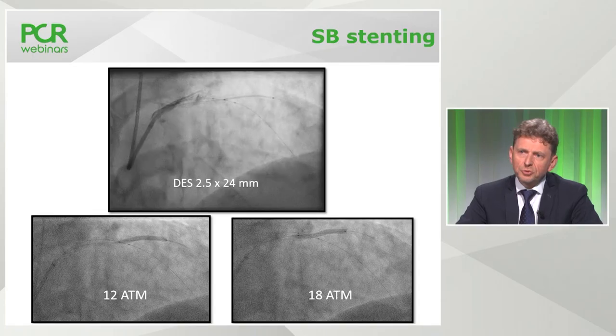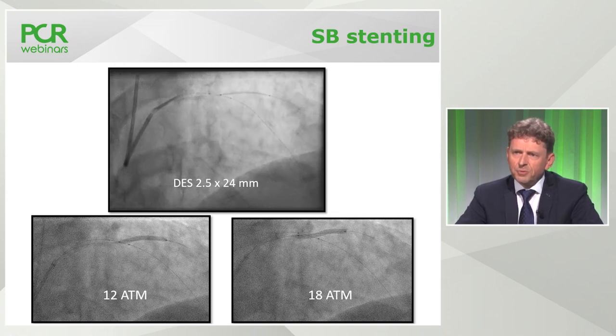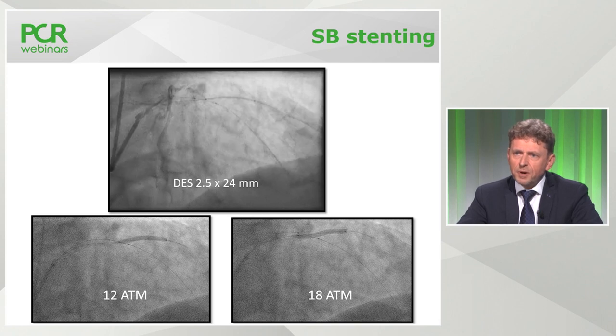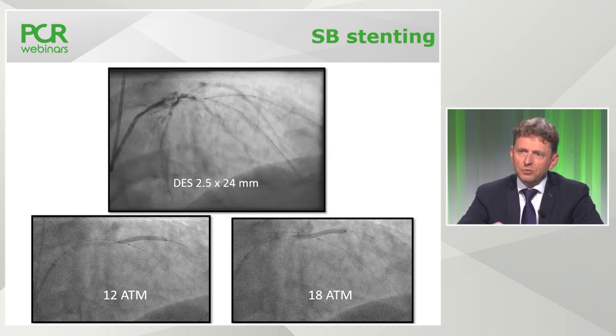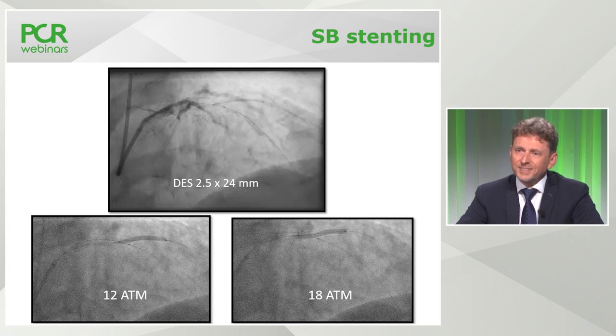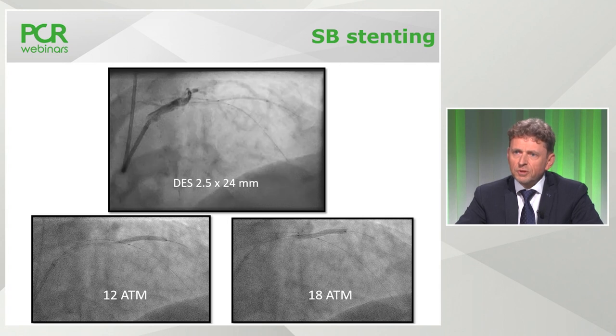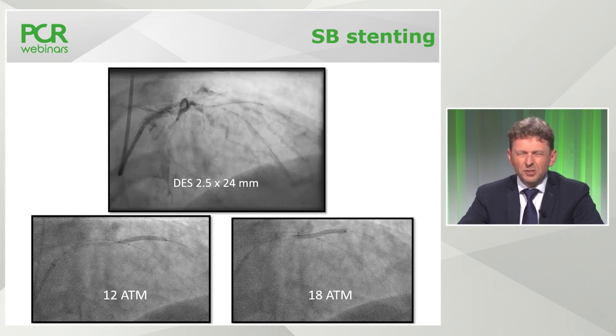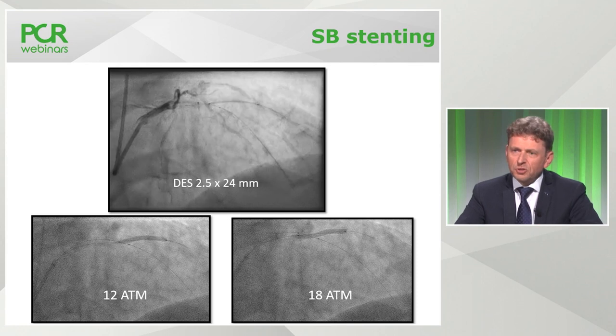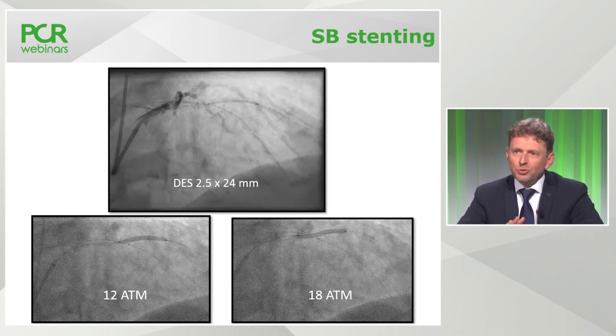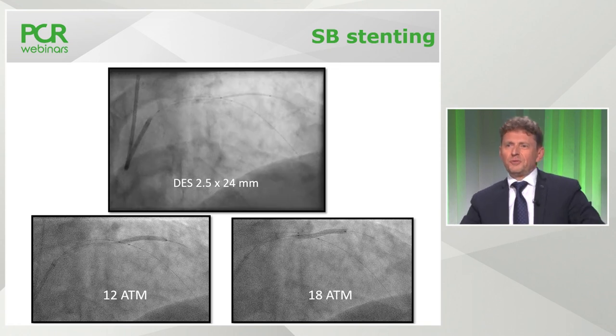Careful, adequate predilatation with non-compliant balloon — but carefully, not to create big dissections. The next step is side branch stenting. You see the side branch stent in position with some small protrusion towards the main vessel. A very important part of the procedure is that you need to have a parked balloon in the main vessel because you need to crush the stent just after implantation. You can appreciate the two balloon markers already parked. In most cases, we park the main vessel balloon at the level of the bifurcation — it's important not to be proximal.